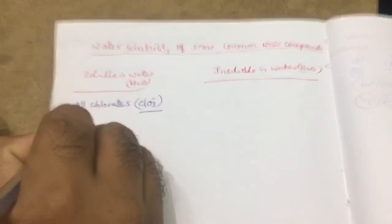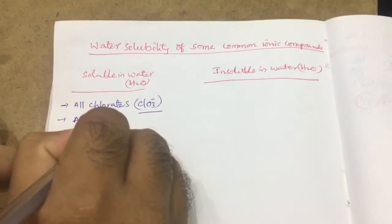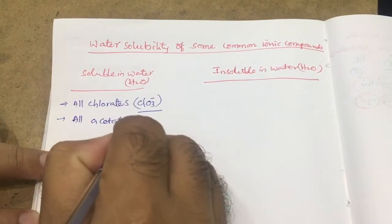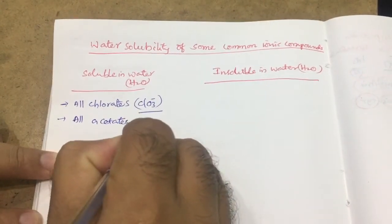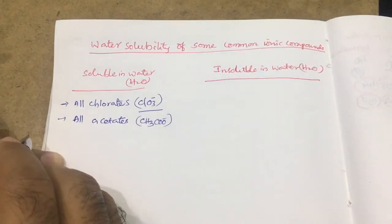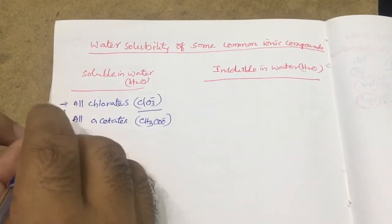Next, all acetates are soluble. Acetate form ion is CH3COO minus. Along with this, any positive charge, that is soluble.